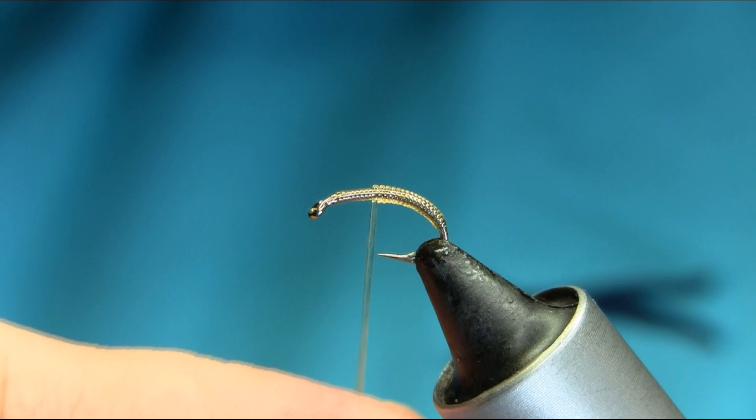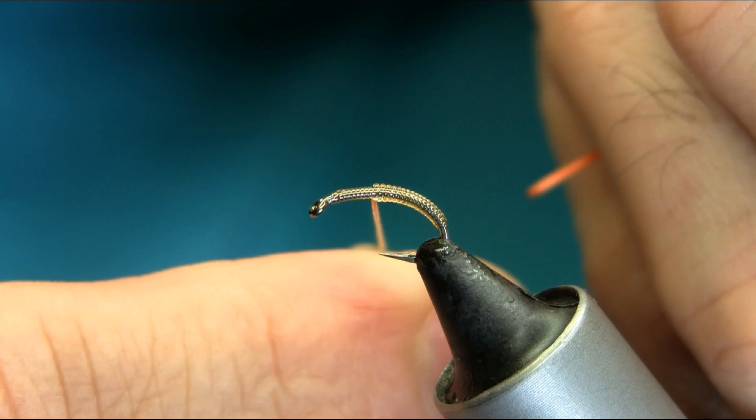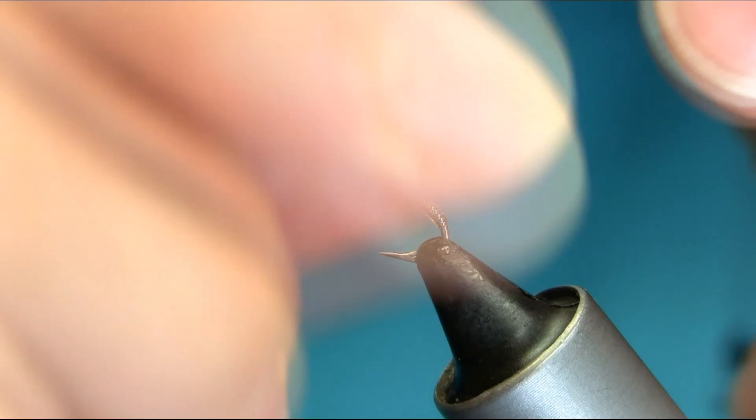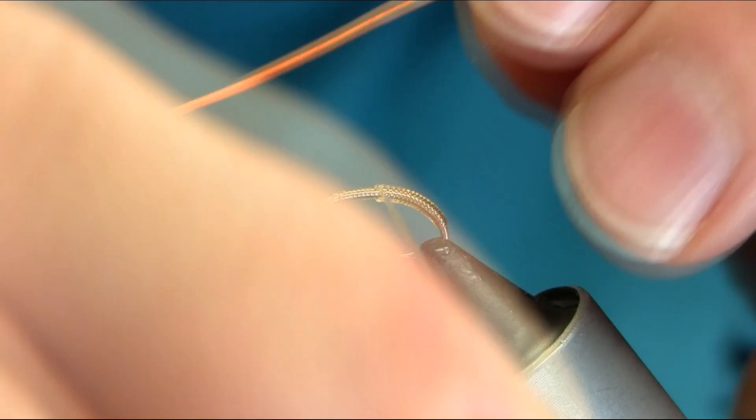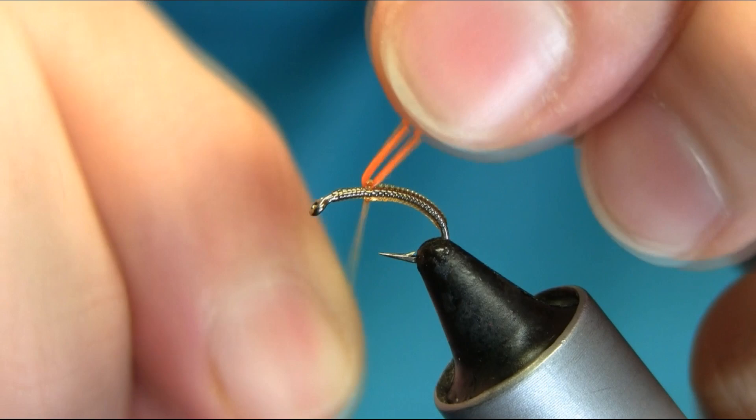Here what I'm going to do are some cheeks. I'm using orange spun flex. If you can just catch that on the top, the same thread. Here just use the loose turn because we need a nice thorax.